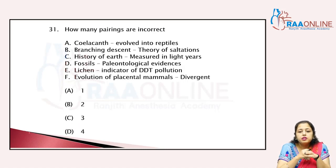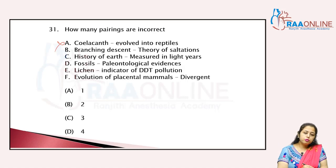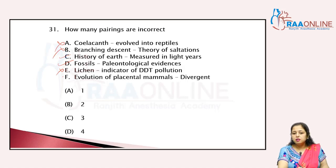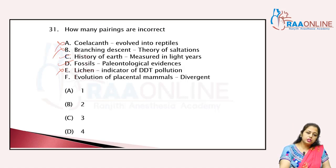Coelacanth evolved into reptiles — no, wrong. Branching descent is the theory of saltation — no, branching descent is related to natural selection (Darwinian theory); saltation is large-step mutation given by de Vries — wrong. Paleontological evidence — correct. Lichens as indicators of DDT pollution — no, lichens grow in unpolluted areas — wrong. Evolution of placental mammals is divergent — no, marsupials show divergent evolution, but placental mammals show adaptive radiation with convergent evolution — wrong. Answer is D, four pairs incorrect.